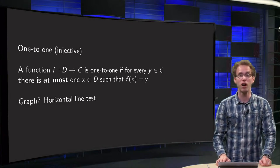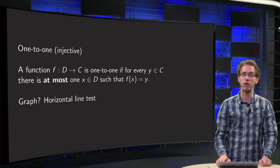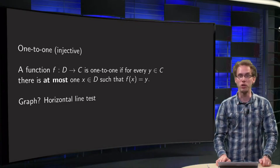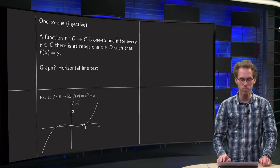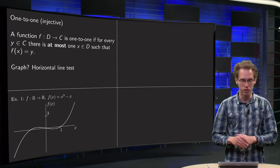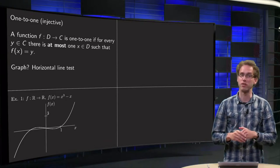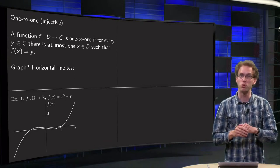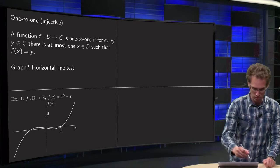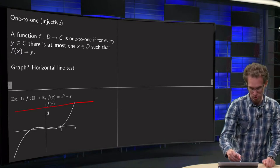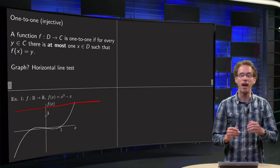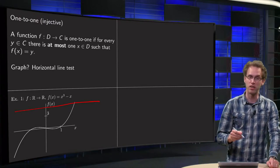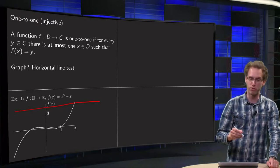Now can we use the graph of f to test this? We use the horizontal line test. So for example, in our first example f(x) = x³ - x, we are going to draw horizontal lines — for example, a horizontal line over here — and we see how many times it intersects the graph of the function f.